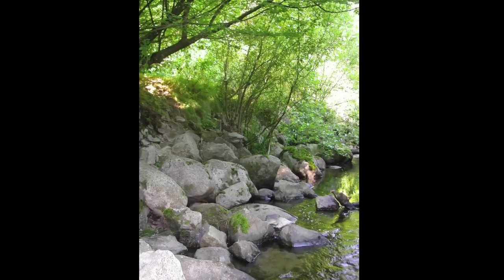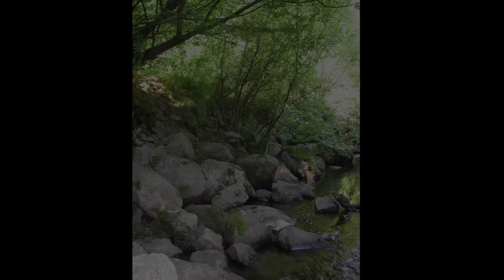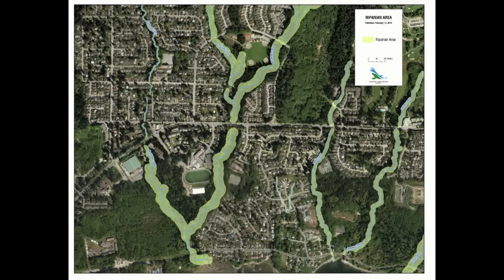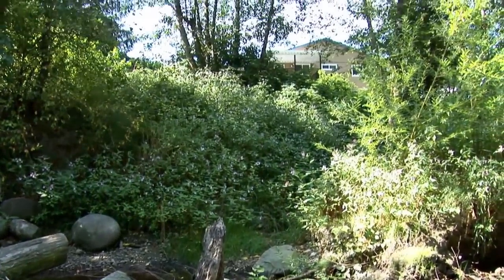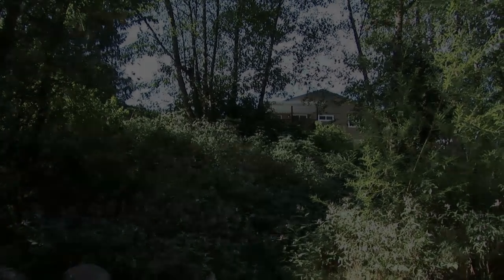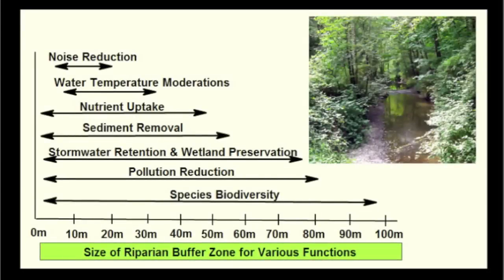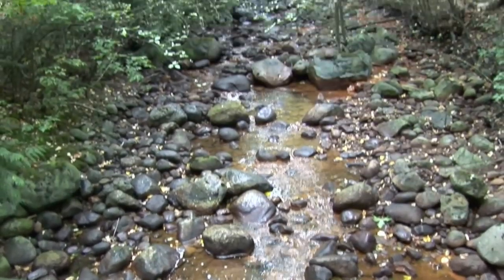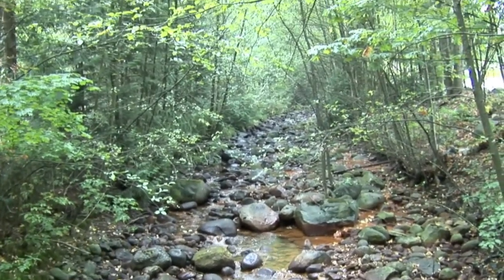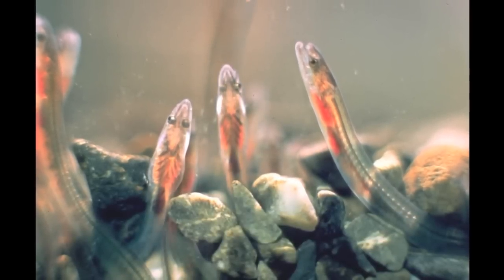A key component to maintaining a more natural stream channel is protecting the riparian buffer zone. Riparian buffer zones are vegetated areas next to water resources that provide protection from non-point source pollution. They also provide bank stabilization and aquatic and wildlife habitat. Well-vegetated riparian buffers can also moderate water temperature, take up nutrients, and provide a noise barrier. Urban streams with a riparian buffer zone and mixed substrate have higher biodiversity than streams next to urban development.